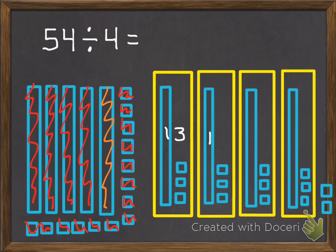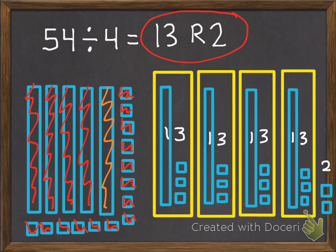So each group has 1 ten and 3 ones, or 13. And we have 2 remaining over here. So we get 13 remainder 2.